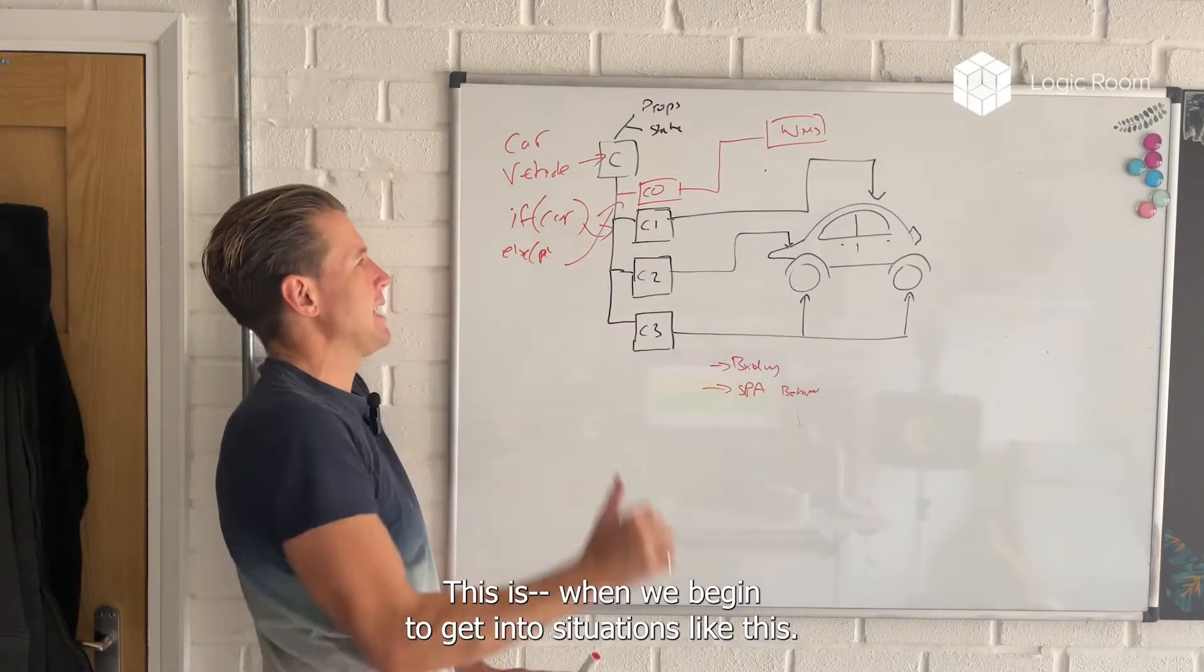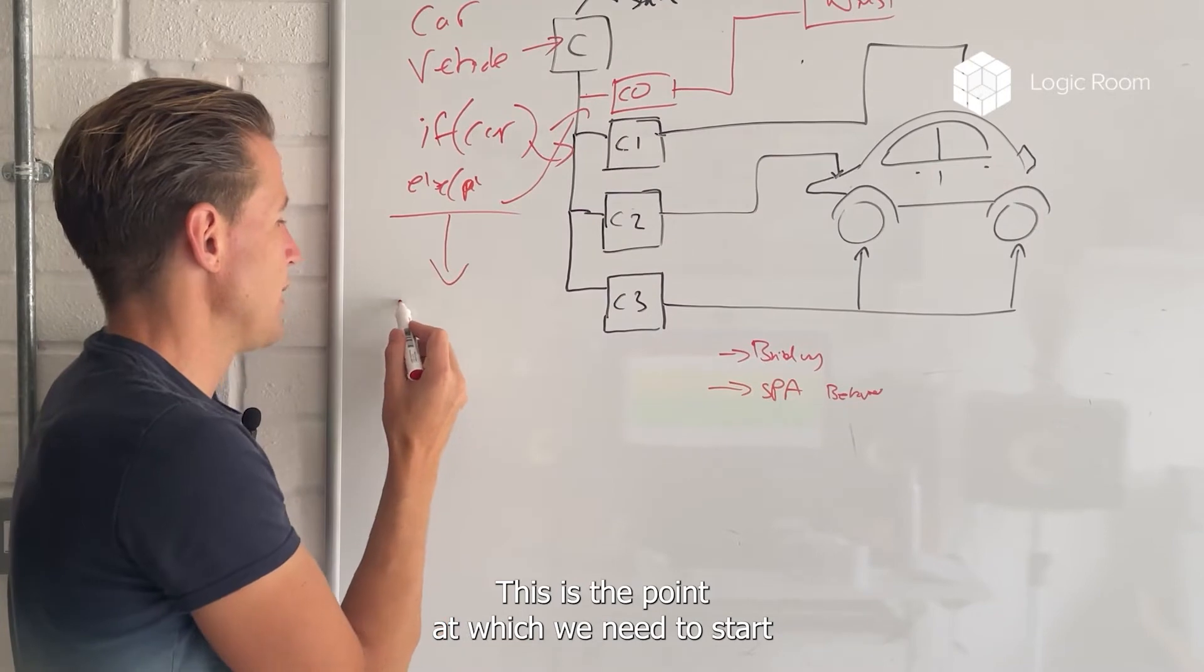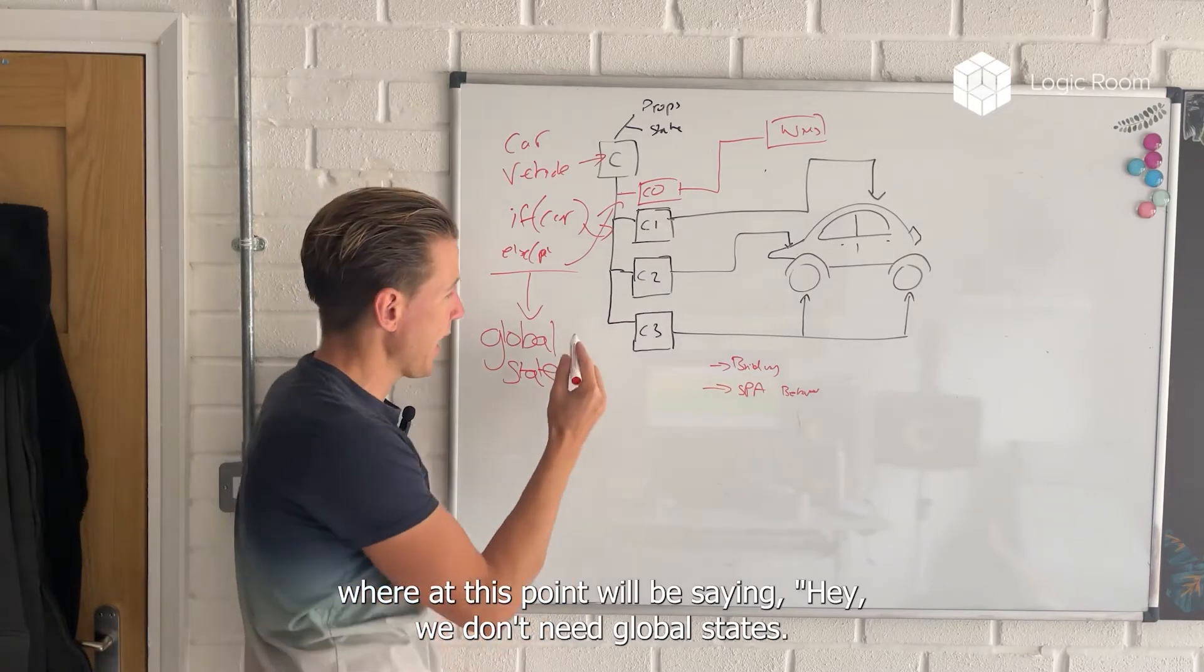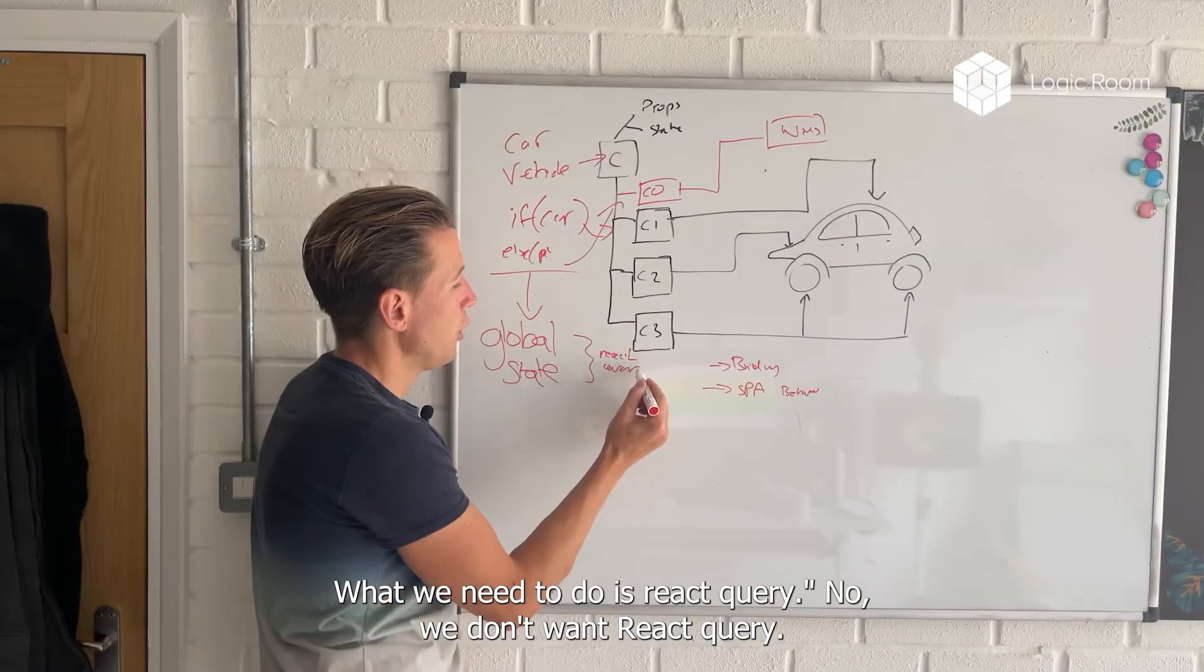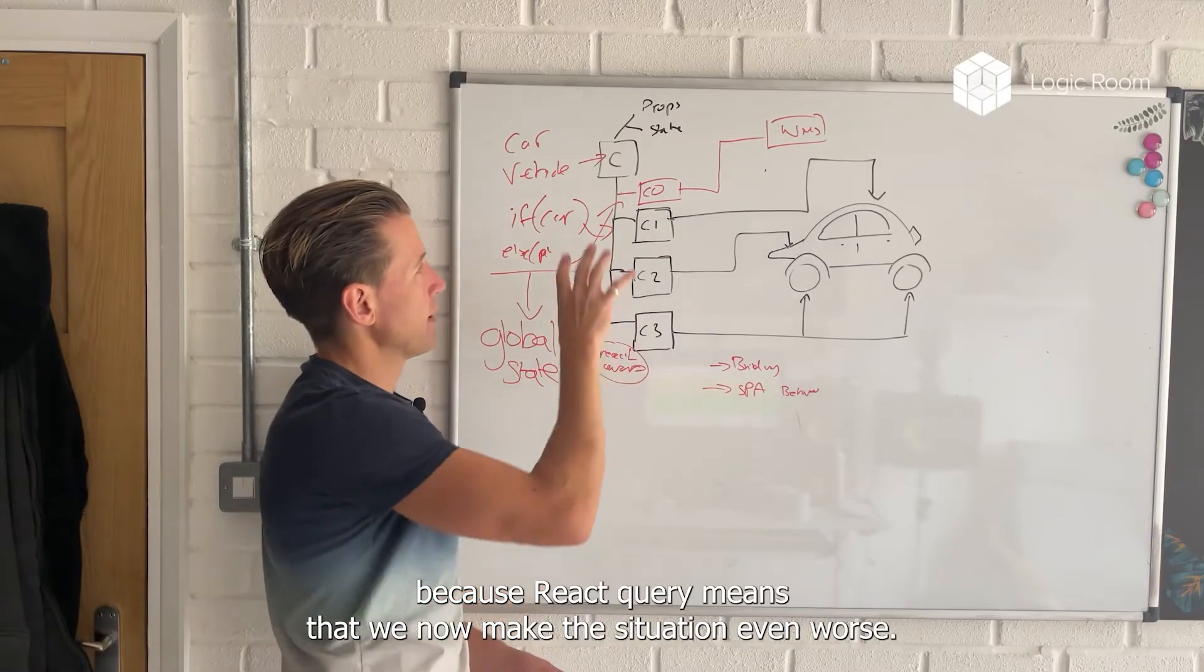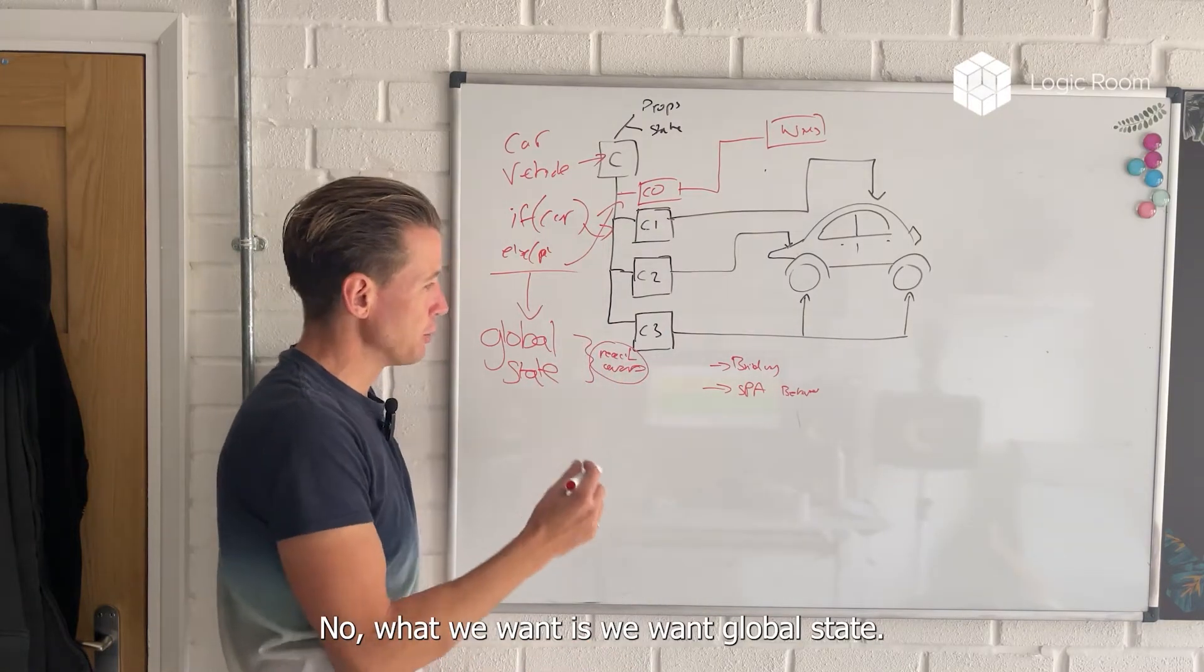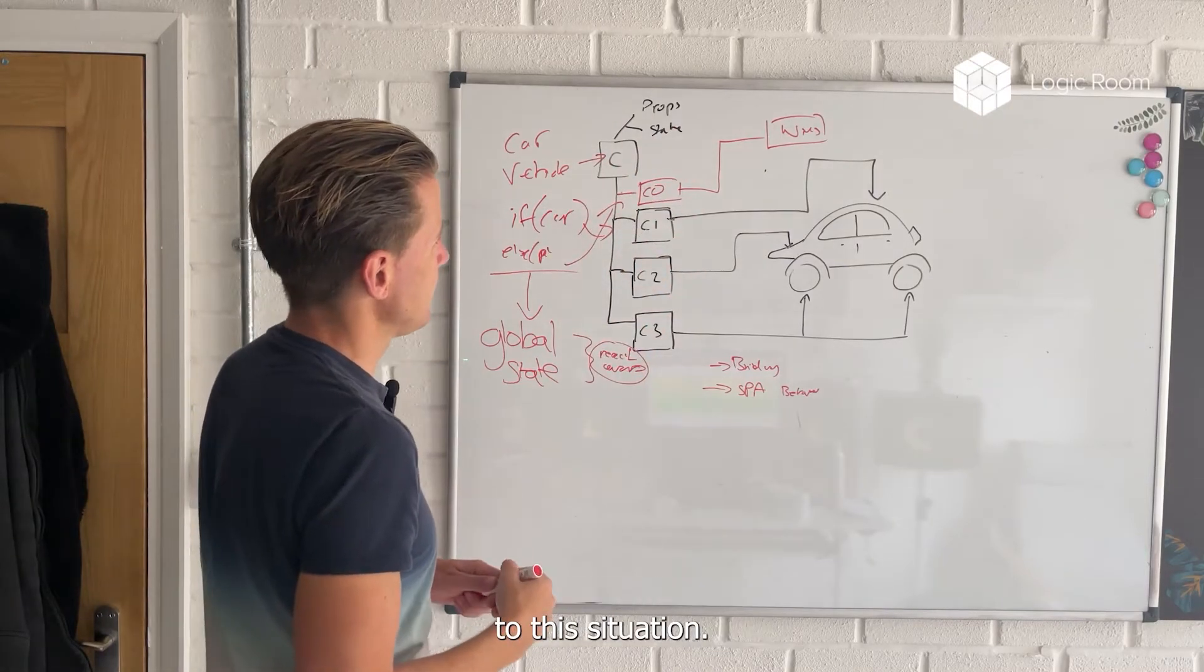When we begin to get into situations like this, this is the point at which we need to start using global state. I know some people at this point will be saying we don't need global state anymore, what we need to do is React query. No, we don't want React query. I'll talk about that in another video because React query means that we now have made the situation even worse. We're going to have to push this hierarchy off to our backend. No, what we want is we want global state.